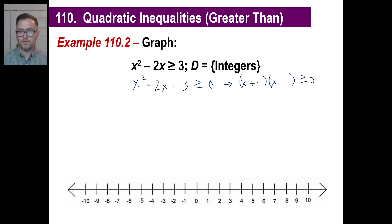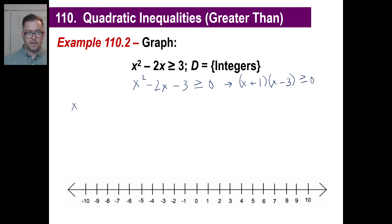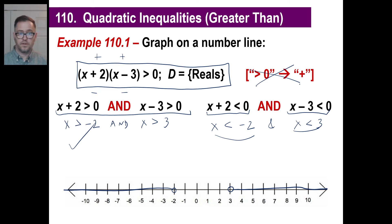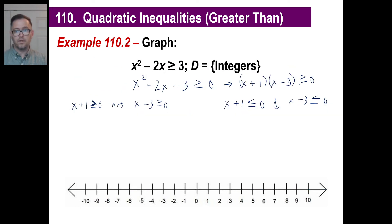Factoring gives us x plus 1 times x minus 3, greater than or equal to 0. One factor is plus and one is minus; it adds to negative 2 and multiplies to give negative 3, so that's 1 and 3. There are two possibilities: x plus 1 greater than or equal to 0 and x minus 3 greater than or equal to 0; or x plus 1 less than or equal to 0 and x minus 3 less than or equal to 0. A negative times a negative is positive, and a positive times a positive is also positive.